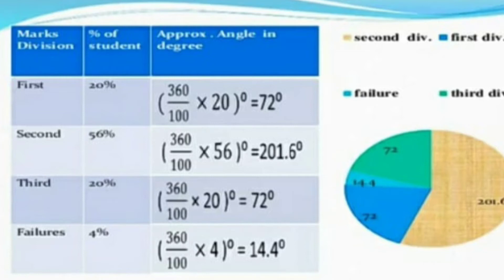You got the angles by the formula: 360 divided by 100 into the given percentage. Why we are telling 360? Because the circumference of the circle is 360 degrees. You have to take that 360 degrees.